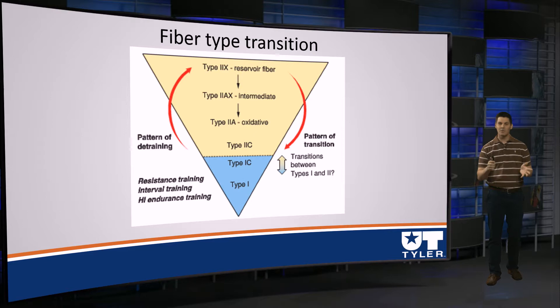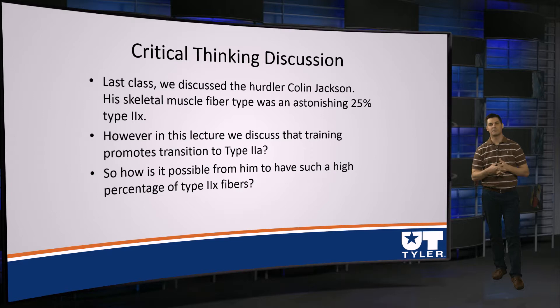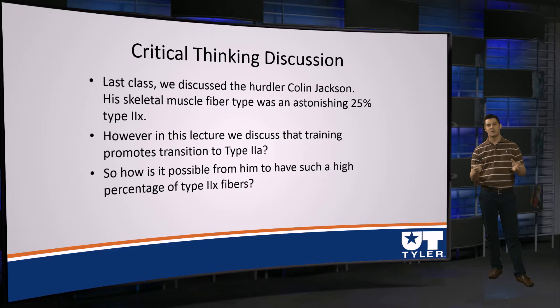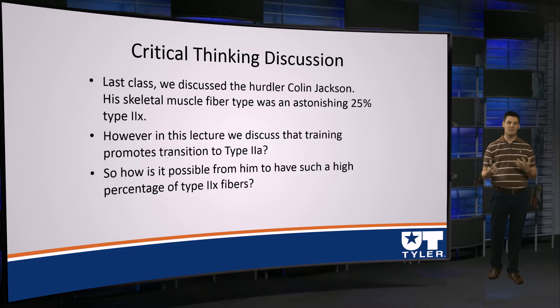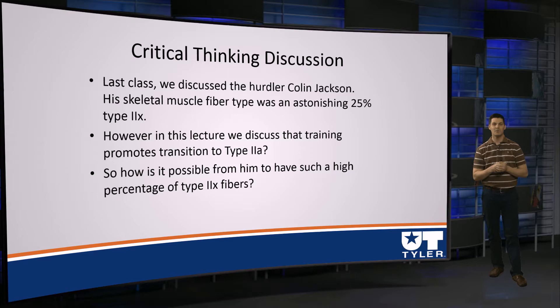However, as I mentioned, we don't really transition to type 2X fibers, which brings up an interesting point. In a previous module, we talked about data from Dr. Trappi on world champion sprinter Colin Jackson. What he found is that Colin Jackson's skeletal muscle fiber type was an astonishing 25% type 2X fibers in the thigh muscles. That is incredibly high — in normal humans, it's typically around two to three percent, with some literature reporting up to maybe eight percent type 2B or 2X fibers in the thigh. He has an astonishing 25% type 2X.